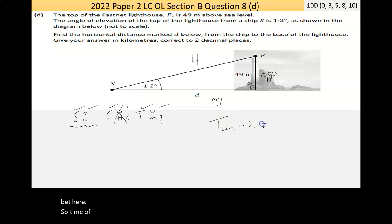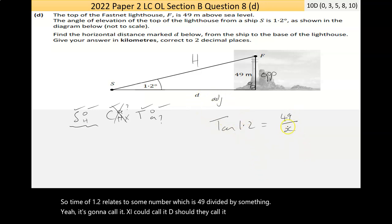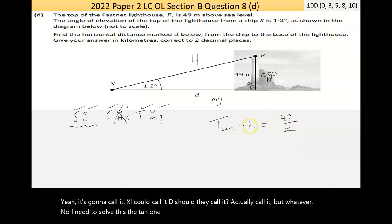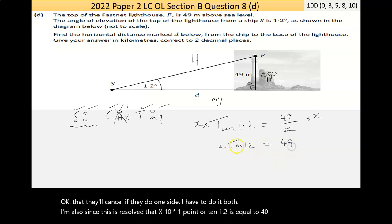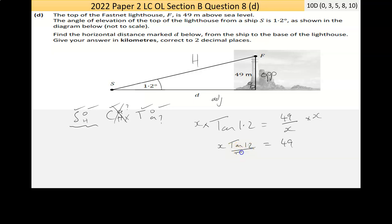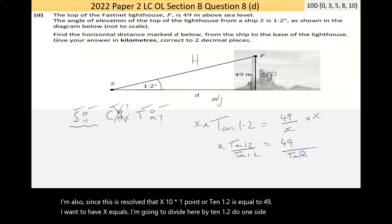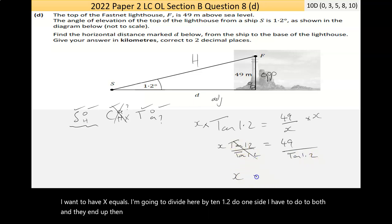So, tan of 1.2 relates to some number, which is 49 divided by something. I'm just going to call it x. I could call it d. Actually, they call it d. I should call it d, but whatever. Now, I need to solve this. Now, tan 1.2 is a number. The only unknown I have here is x. So, I'm going to get rid of the x by multiplying by x. That, they'll cancel. If I do it one side, I have to do it both. I'm also, let's just resolve that. x tan times 1.2, or tan 1.2 is equal to 49. Now, I want to have x equal, so I'm going to divide here by tan 1.2. Do it one side, I have to do it to both. And they end up then, they cancel, with x is equal to 49 over tan of 1.2. I hope the algebra makes sense. I'm not going too fast.